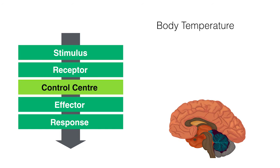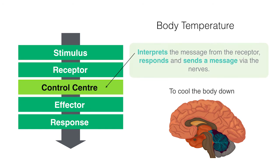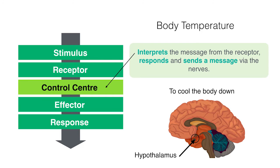The brain, also known as the better-sounding control center, interprets the message from the receptor, responds, and sends a message via the nerves to cool the body down. To be more specific, the control center only refers to the hypothalamus in the brain, which is in charge of homeostasis. The rest of the brain is essentially just wasting space in the context of this stuff.